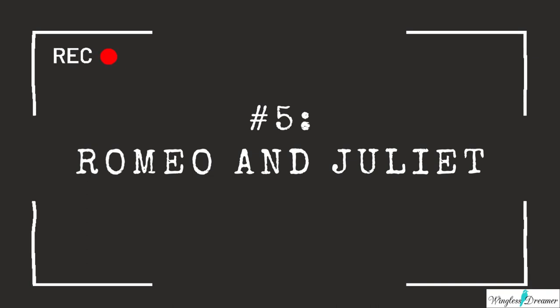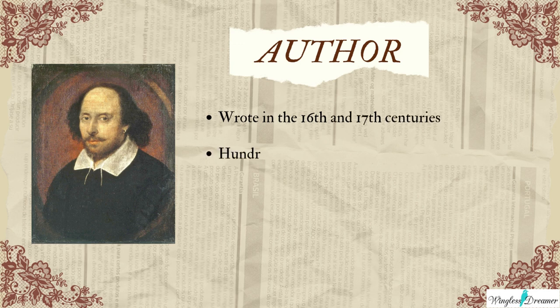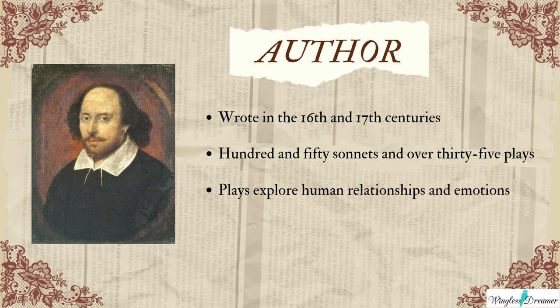Romeo and Juliet — the tale of the star-crossed lovers is known to everyone, and so is Shakespeare. He wrote in the 16th and 17th century, producing over 150 sonnets and over 35 plays, including comedies and tragedies. A lot of his life, especially the biographical details, are known through official or legal documents. But the more people study his works, the more they've discovered about him. A lot of his plays are based on his own experiences, along with his imaginative and brilliant mind, and they explore human relationships and emotions — something that most playwrights of the times did not deal with.